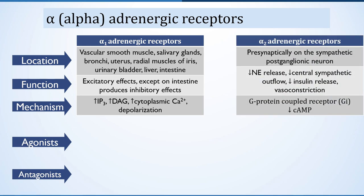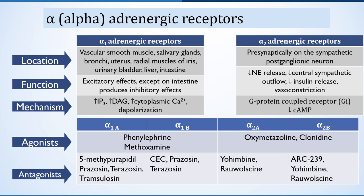Alpha-2 adrenergic receptors are located presynaptically on the sympathetic postganglionic neuron, where they decrease norepinephrine release, decrease central sympathetic outflow, decrease insulin release and cause vasoconstriction. These receptors are G-protein coupled receptors associated with the Gi (inhibitory) subunit, where they decrease the concentration of cyclic AMP. Some agonists and antagonists are listed here for reference.